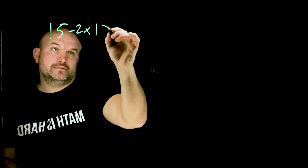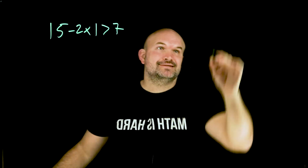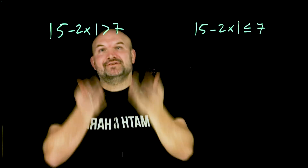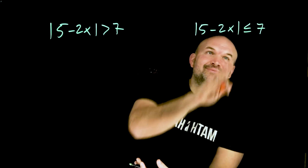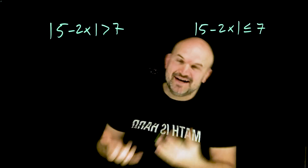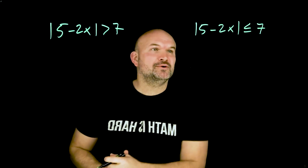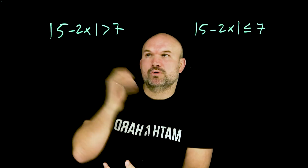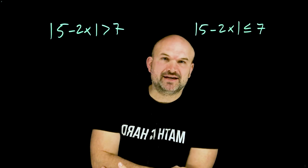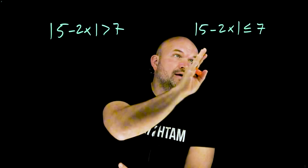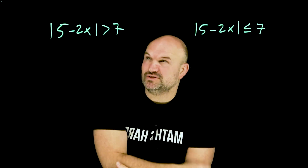What's the difference between an inequality that uses a greater than symbol and one that uses a less than or equal to? The obvious answer is one is greater than and one is less than or equal to. But the important point is what do we need to know when we are solving an absolute value inequality with that greater than symbol compared to the less than or equal to?